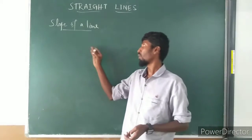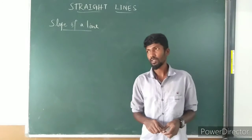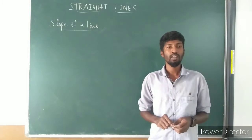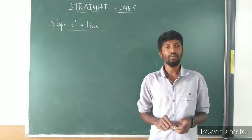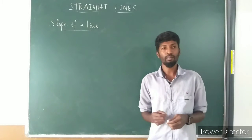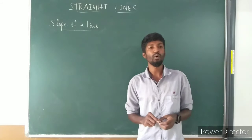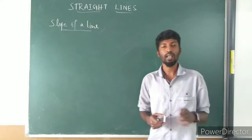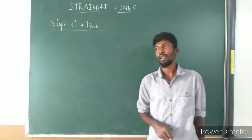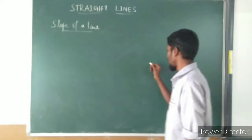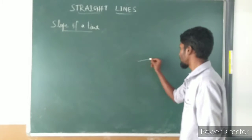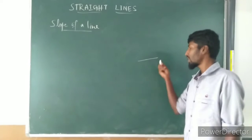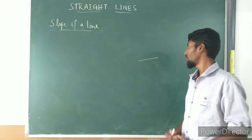Slope of a line. The slope or gradient of a line is a number that describes both the direction and the steepness of a line. So if I draw a line, we will describe the direction and the steepness of that line.